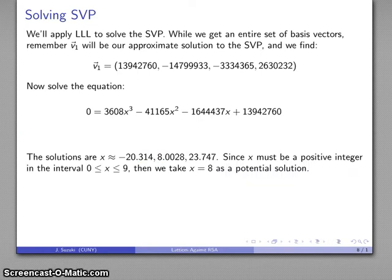Now, remember that x has to be a positive integer in the interval 0 to 9. None of these are integers, obviously, but my rounded value gives me an integer in this interval 0 to 9. And so I'm going to take x equals 8 as a potential solution to my original congruence.